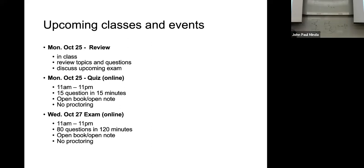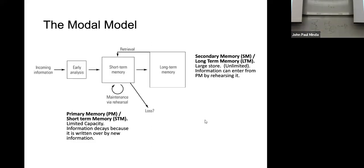Let's review. We started off with a discussion of the modal model last week — that model of short-term and long-term memory that was dominant in the 1960s and 1970s, and probably still influences how we think about memory. We often think about memory as something we're conscious of: short-term information we're actively working on, and our long-term knowledge base. This distinction between short and long-term memory is pretty pervasive.